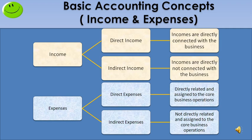Finally, let me see about income and expense. In business, income means the amount received from your customer for the goods or service that you have sold to them. This income is classified into two types: direct income and indirect income. Direct income means the income received is directly related to your core business. For example, in a construction business, selling a flat is the core business — the amount received from a customer for selling a flat is direct income.